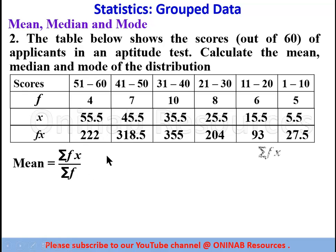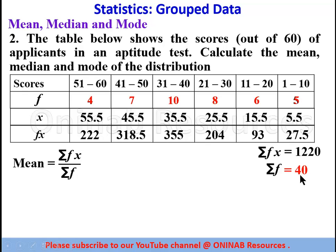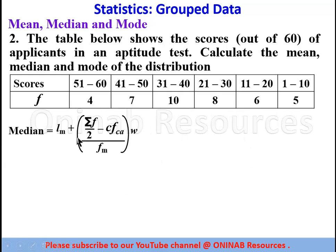10 times 35.5 gives 355, 8 times 25.5 gives 204, 6 times 15.5 gives 93, and 5 times 5.5 gives 27.5. Adding all fx values: 222 up to 27.5 gives summation of fx = 1220. Adding the frequencies 4, 7, 10, 8, 6, and 5 gives summation of f = 40. Substituting into the mean formula: 1220 divided by 40 gives a mean of 30.5.